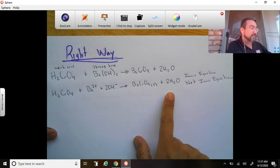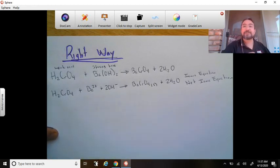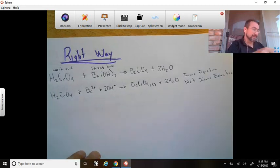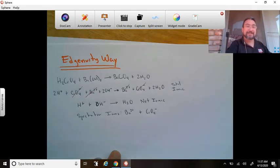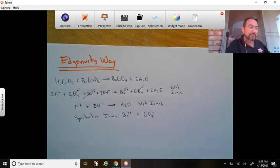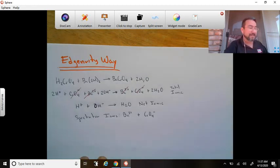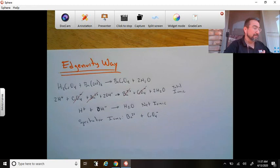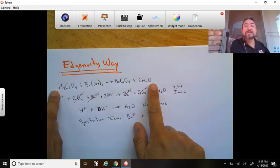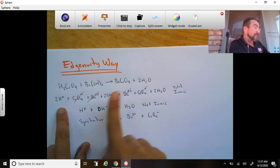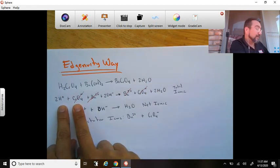They would just write it like this. There's nothing to be gained from writing the net ionic equation in this case. Okay, now let's see what Ingenuity does. The Ingenuity way. And I don't know why this is wrong and I sent them a text telling them that this is wrong, but we'll see what happens. So we start with the same initial reaction.